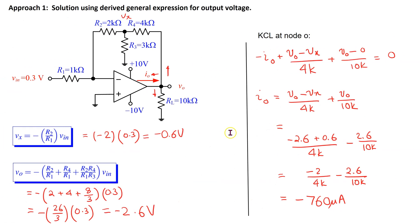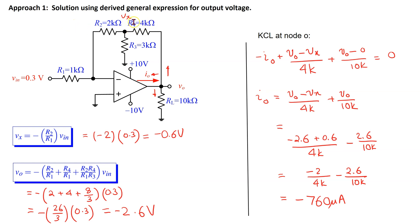Using the values of Vx and V0, we can solve for I0 by applying Kirchhoff's current law at the output node. Solving this equation gives I0 equal to minus 760 microamps. This minus sign means that in reality, this current I0 is flowing into the op-amp output pin. Thus, we have solved for V0 and I0 using approach 1, which involves finding the general expression for the output voltage first.